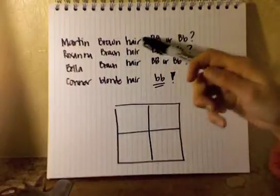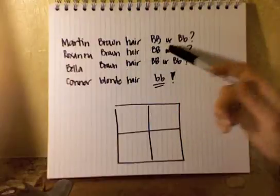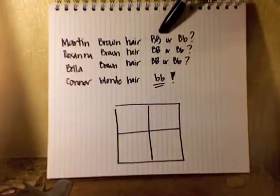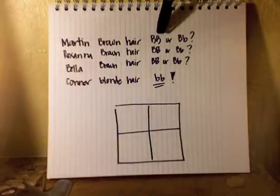The clues you have are the given information. Martin has brown hair, Roxanna has brown hair. You don't know their genotype. If they have brown hair, they could be purebred, which means both their alleles are the same.